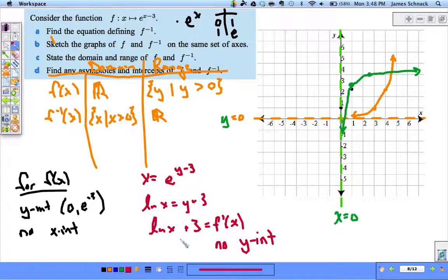But we could find the x-intercept. And that x-intercept is just going to be the y-intercept for f of x: e to the negative third, comma zero. That's this point right here.